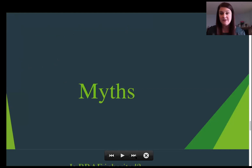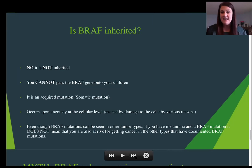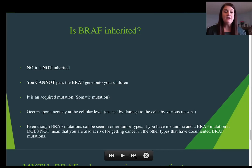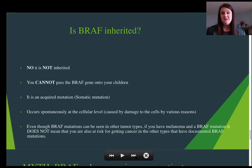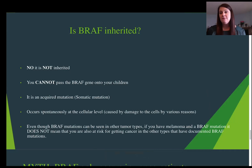I'm going to address a couple of myths very quickly. Is BRAF inherited? We get that question a lot. It's not inherited — you cannot pass the BRAF gene to your children. It's an acquired mutation; in genetic terms, that's called a somatic mutation. It occurs spontaneously at a cellular level caused by cellular damage, but it is not a sex-linked gene, so it is not inherited. Sometimes it gets confused with BRCA, but this is an extremely separate thing. Even though BRAF mutation can be seen in other tumor types, having a melanoma with a BRAF mutation doesn't mean you're at risk for those other cancers.